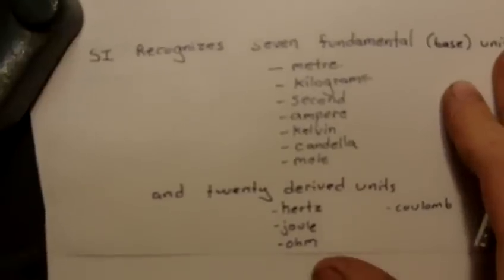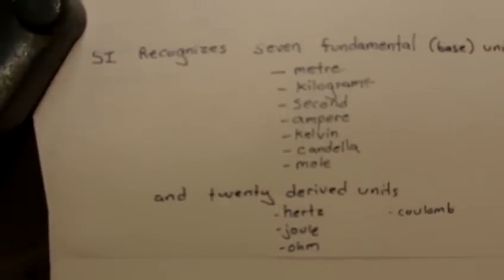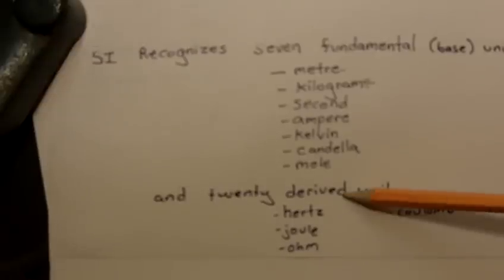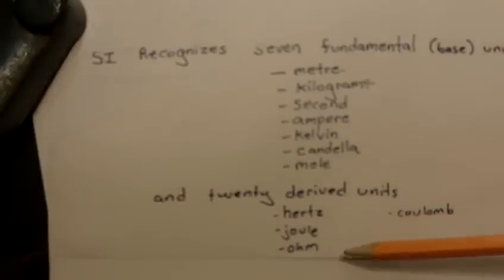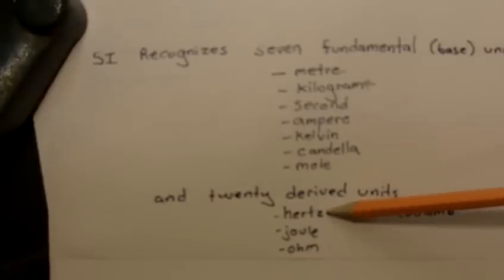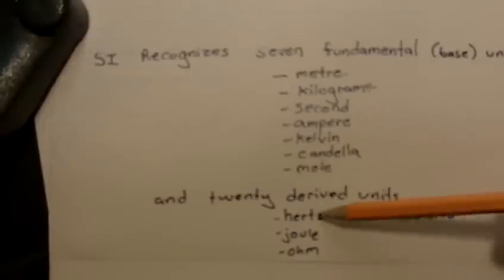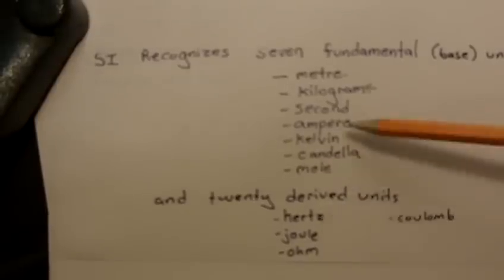There's also 20 derived units. Some of the most famous ones are the Hertz, the Joule, the Ohm, and the Coulomb. These are called derived units because we can only talk about them in terms of one of the fundamentals. For example, a Hertz is a measure of frequency, which is a measurement of how many times something happens in a second. So you can't know what a Hertz is unless you know what a second is.